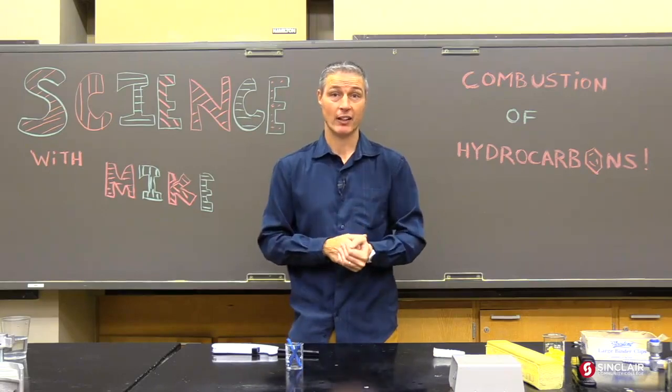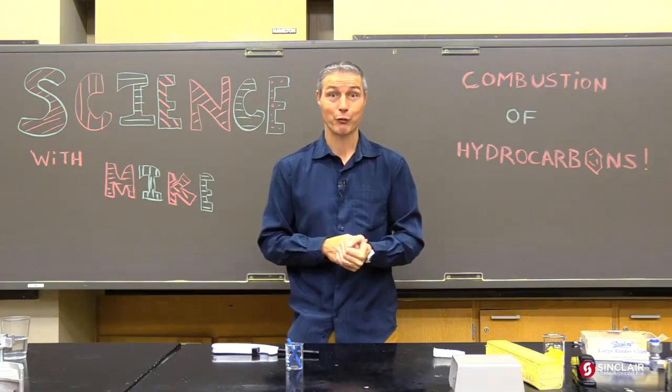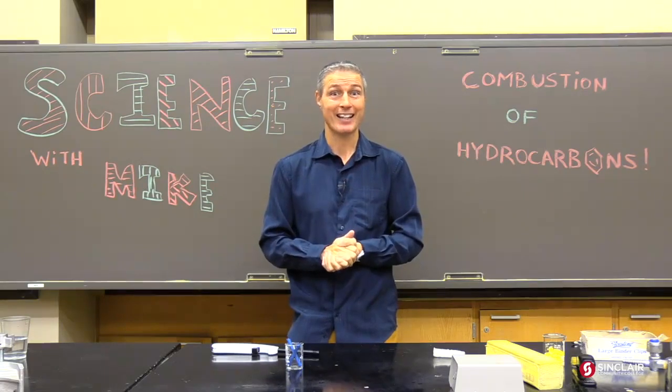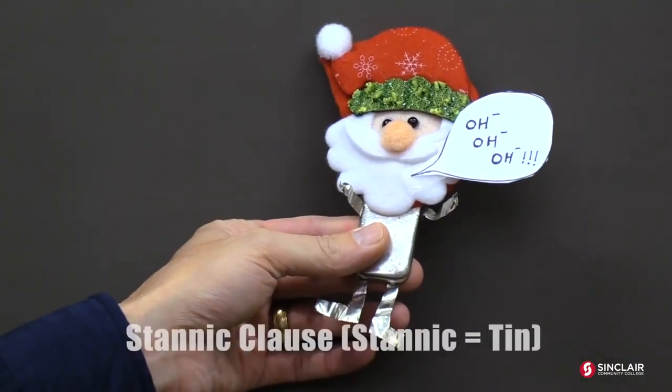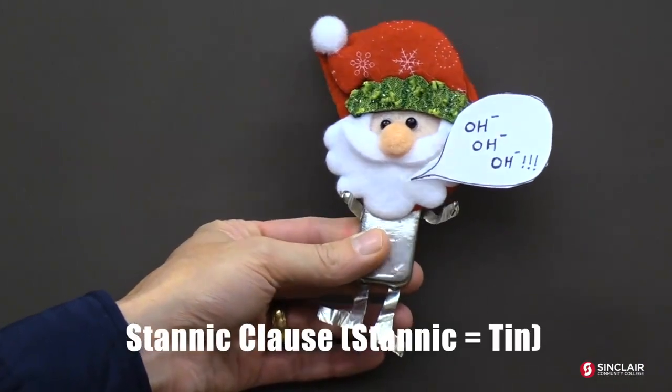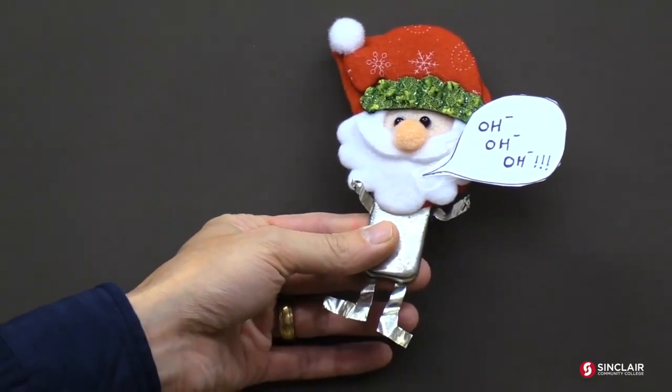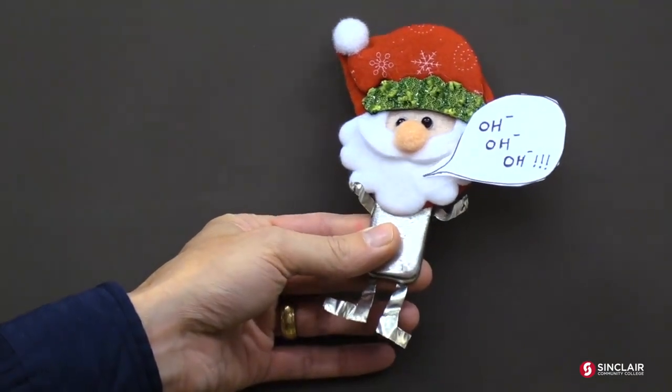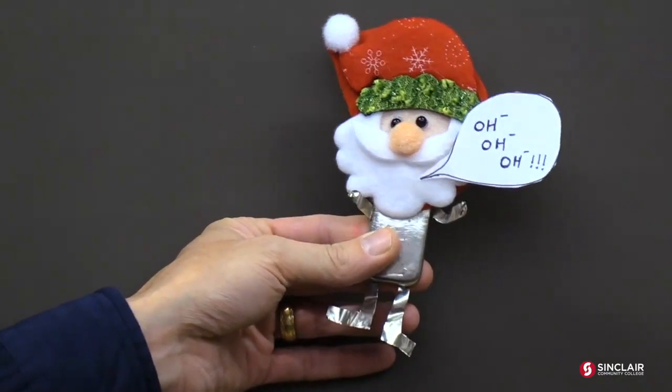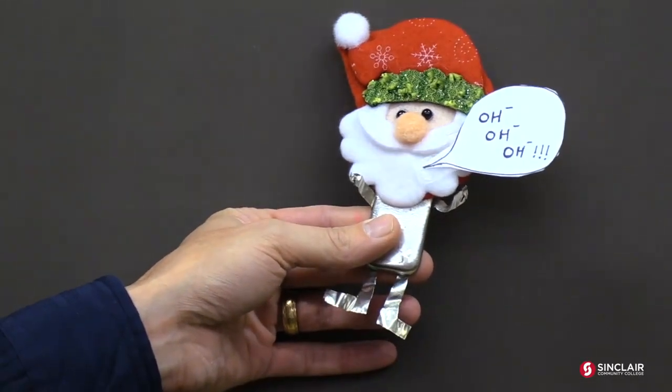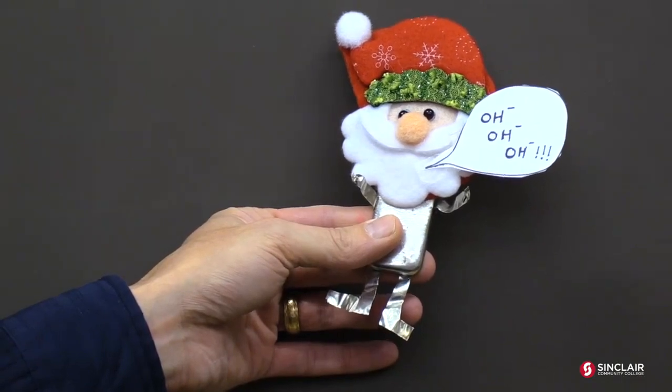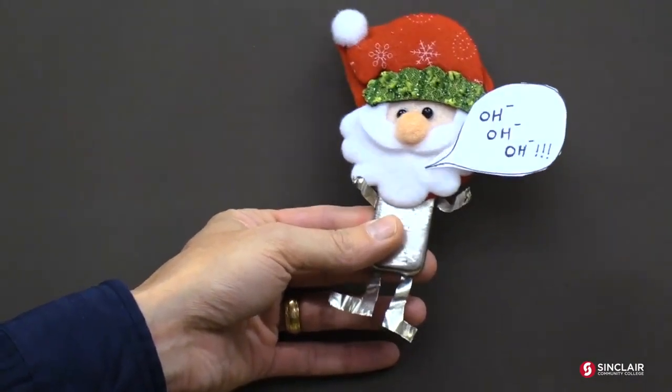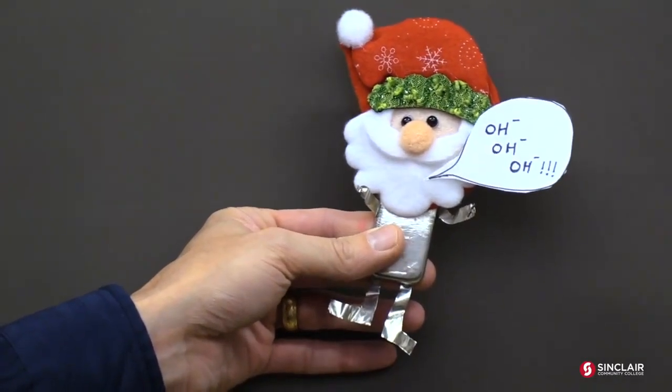And we always like having guests on the show, especially when they're not real. Our next guest is made out of tin. Please give it up for Stanek Clause. Welcome to Science with Mike, Stanek Clause. Oh, oh, oh. Hydroxide. I'm Stanek Clause. And I'm keeping a list and not being obscene of who's burning dirty and who's burning clean. Okay. Would you like to come in the lab and watch us burn things, Stanek Clause? That's kind of just what I said. Doesn't anybody listen anymore?